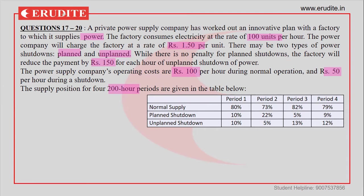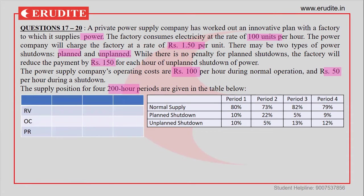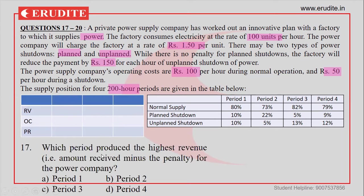Many people immediately start calculating revenue for each 200-hour period. But we should first check what the questions are asking. The first question asks which period produced the highest revenue — that is, amount received minus penalty. This is a comparative analysis across the four periods.